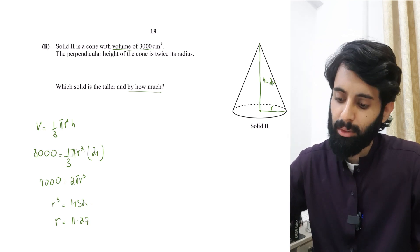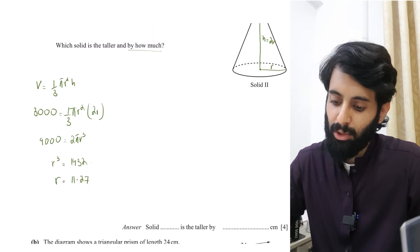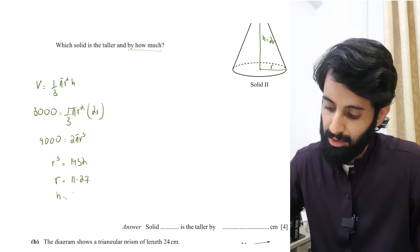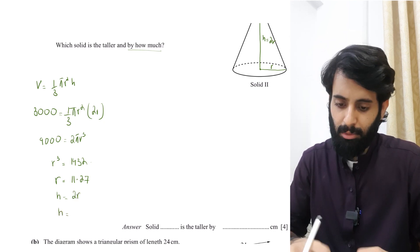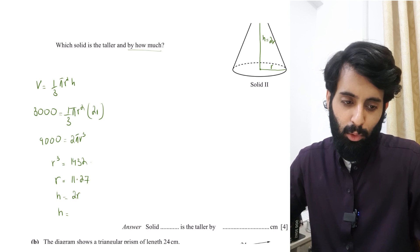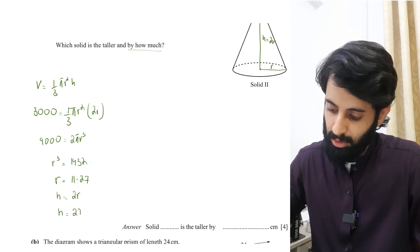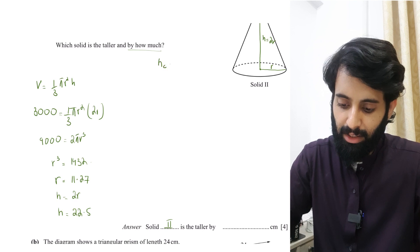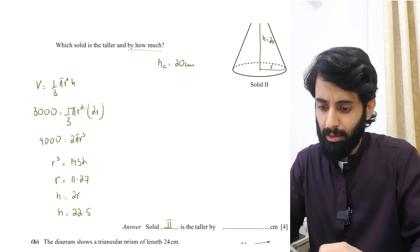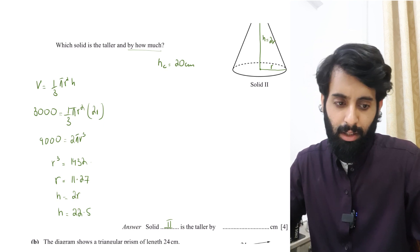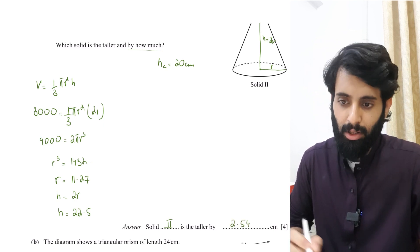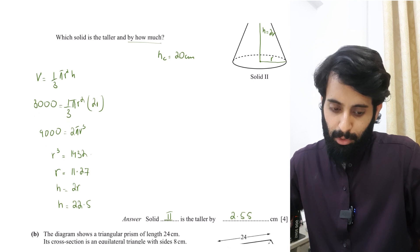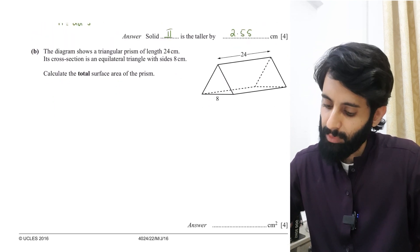The question asks which solid is taller and by how much. The height of the cone is twice its radius: h = 2 × 11.27 ≈ 22.54 cm. The height of the cylinder was 20 cm, so Solid 2 is taller by 22.54 − 20 = 2.54, which rounds to 2.55 centimeters.